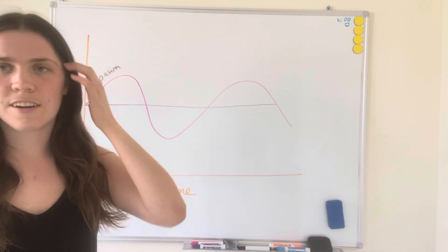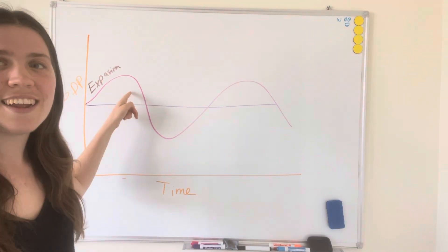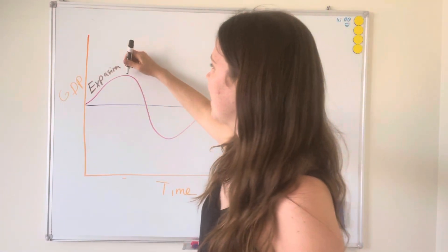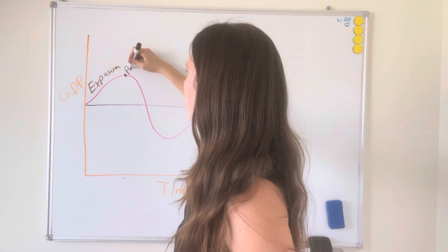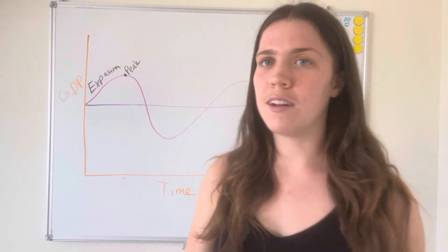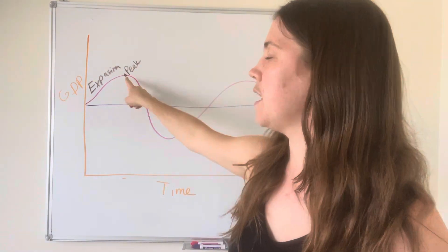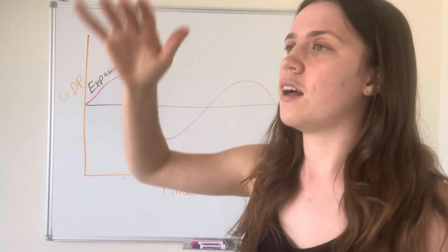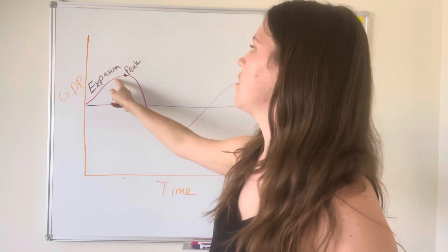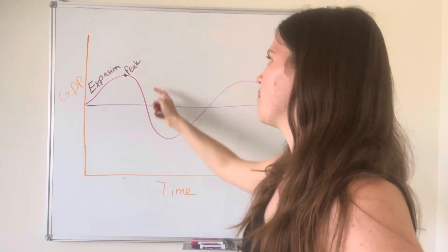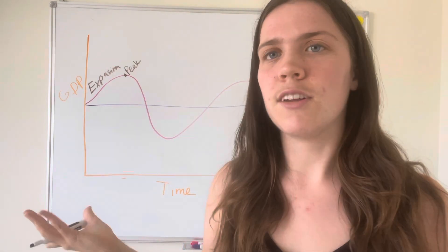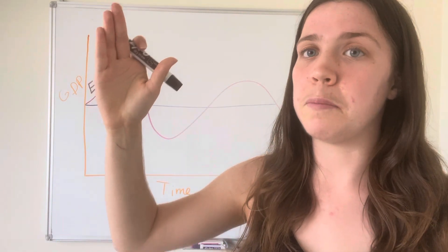The next thing you see our graph doing is peaking at a point and then going down, and so this point right here is called a peak. And it's important to know that a peak is not a period of time, it's like a moment, and then an expansion and recession, those are periods of time. So this is like a day, like June 10th, GDP peaked and then went down.